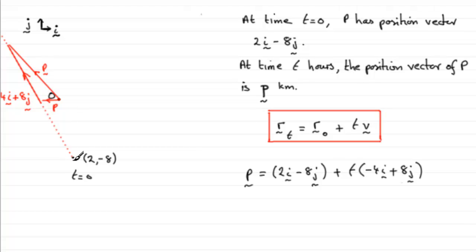followed by, that's plus, 2 lots of the vector 4i minus 8j.